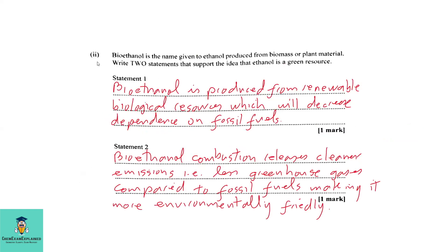Part 2: Bioethanol is a name given to ethanol produced from biomass or plant material. Write two statements that support the idea that ethanol is a green resource. Statement 1: Bioethanol is produced from renewable biological resources which will decrease dependence on fossil fuels. Statement 2: Bioethanol combustion releases cleaner emissions, that is, less greenhouse gases, compared to fossil fuels, making it more environmentally friendly.